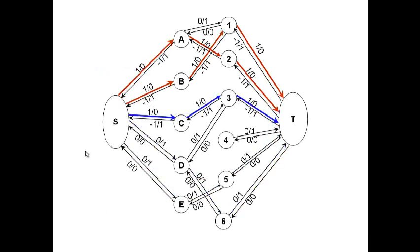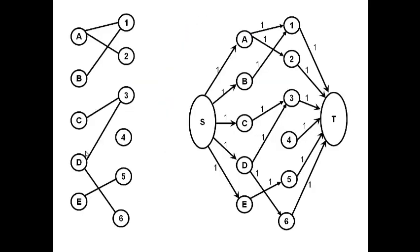The first step is to transform this bipartite graph as a flow graph. We have a source and a sink, and we draw edges from the left set to the right set. All edges go in the direction from source to sink. From the source we have edges to vertices a, b, c, d, e, and from vertices 1, 2, 3, 4, 5, 6 to the sink.